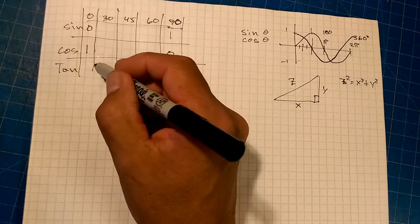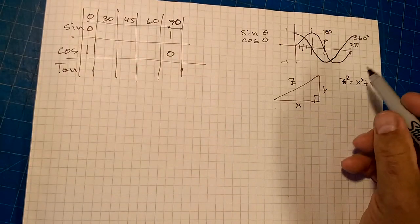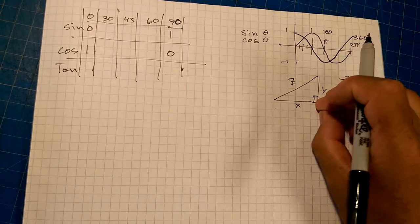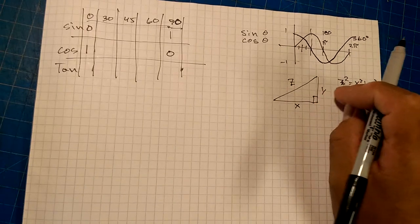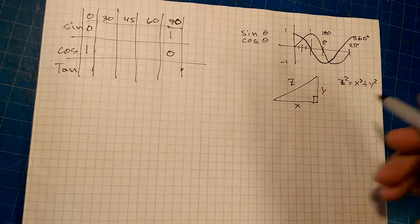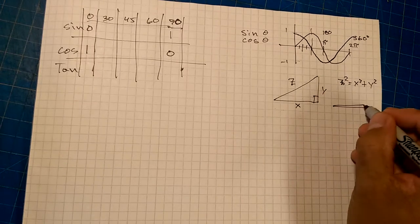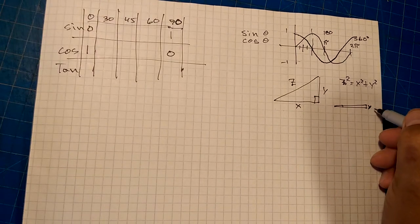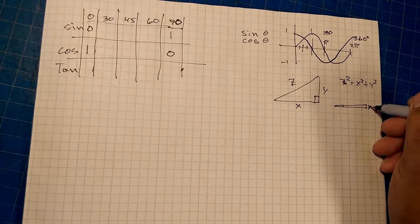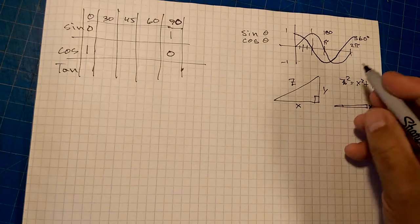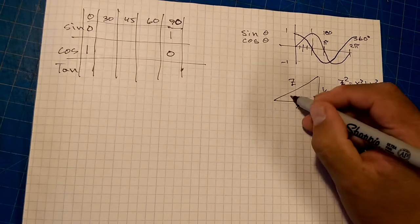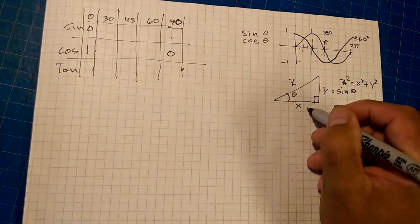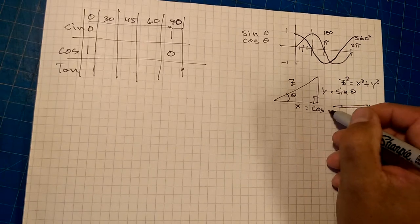And then tan is opposite over adjacent. So, when the angle is 0, y is 0, so opposite must be sine. Right? So, if I've got an angle that is like this, this is y. So, if sine of 0 degrees is close to 0, that means the opposite is sine. Y is equal to sine. Sometimes I can't even remember this. Sine theta.